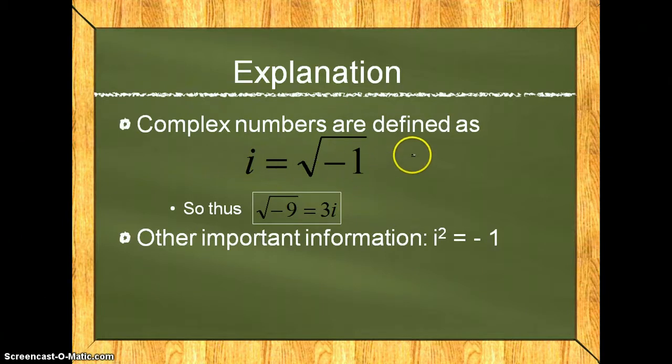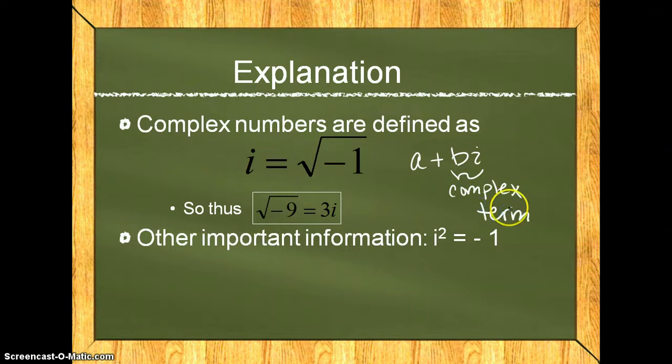The way that you will write a number will be a plus bi, where bi is the complex term. In essence, the square root of negative 9 would be equal to 3i, because you can take the square root of negative 9 and rewrite it as the square root of negative 1 times 9.